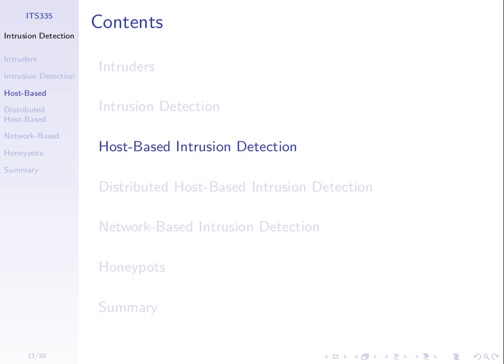Network-based intrusion detection looks at the activities on the network — what packets are being sent between computers, into the network, and out of the network. So it's monitoring the packets and communications, as opposed to monitoring what's happening on the computer, like file reads and programs that are executed.